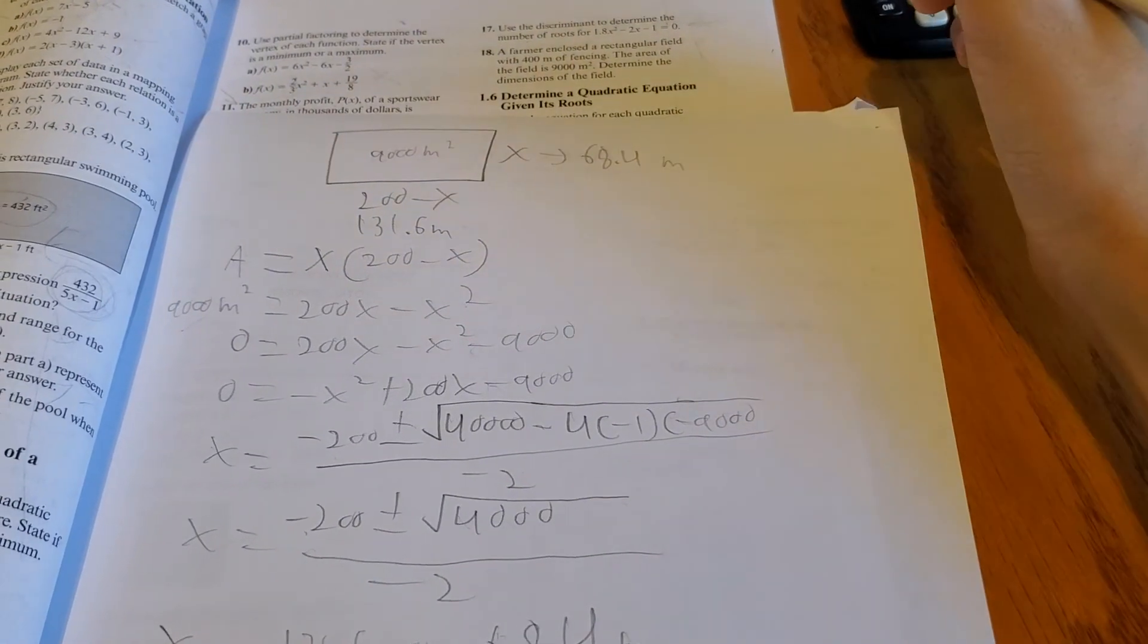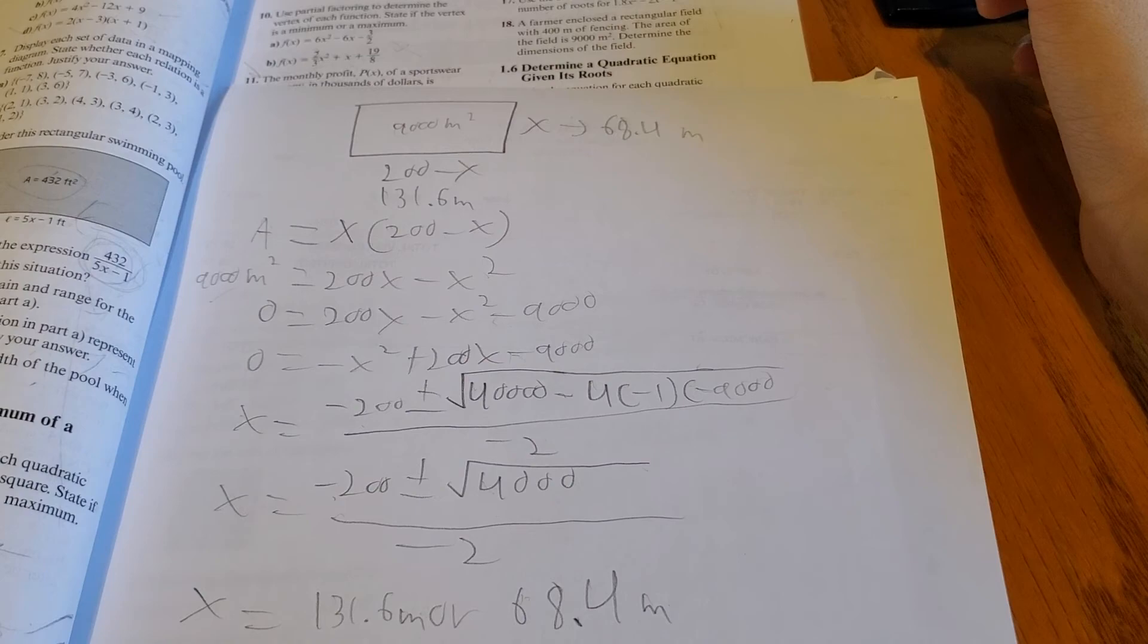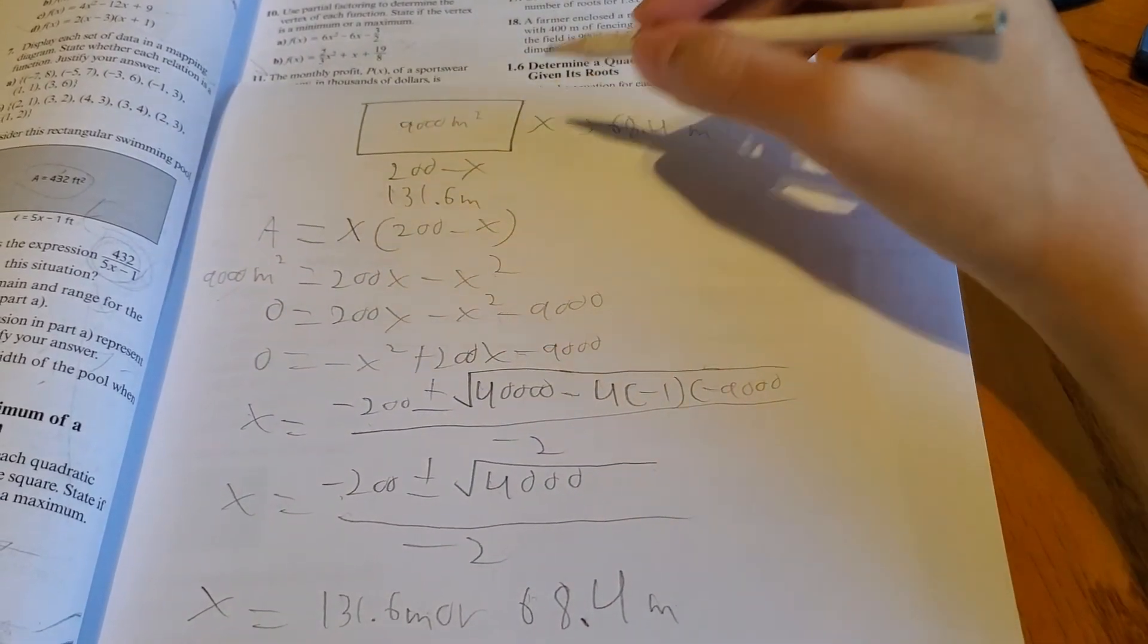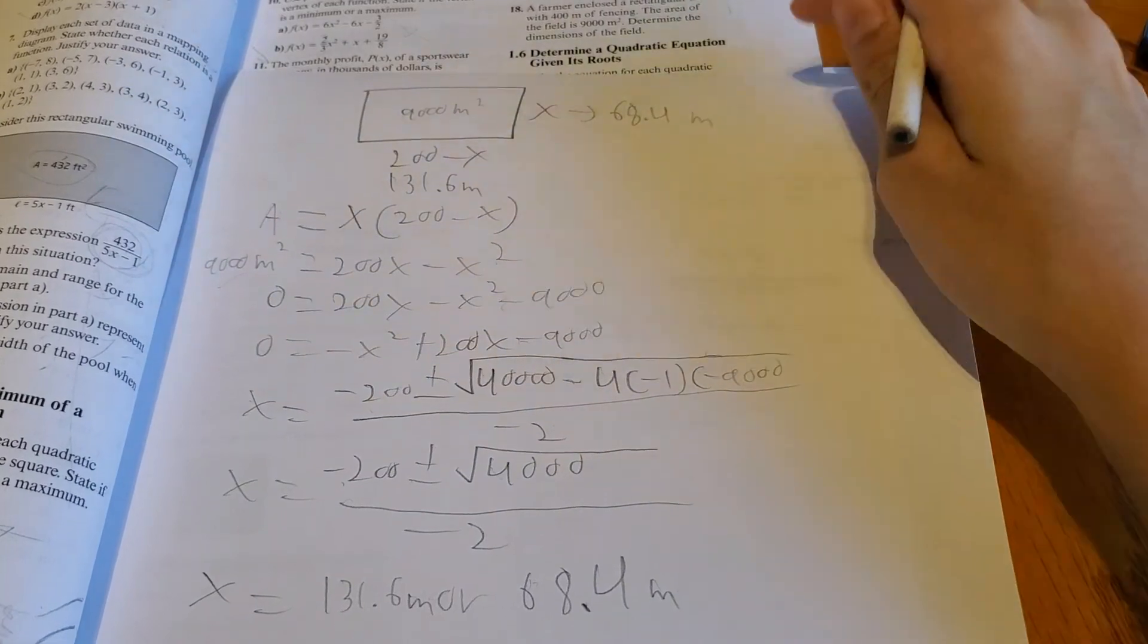And now we can check to make sure our answer is correct by multiplying these two together. And we need to get 9,000 meters squared.